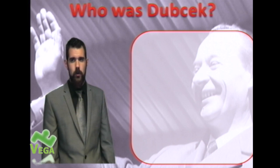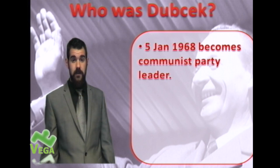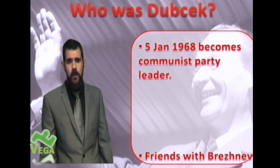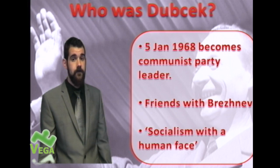Dubček is the man that comes along hoping to fix these problems. On the 5th of January 1968, he becomes the Communist Party leader — effectively the equivalent of a president or prime minister, the most powerful man in Czechoslovakia. He is friends with Brezhnev, the Soviet premier, so he seems to be a good man for the job and should be able to get cooperation from the USSR.